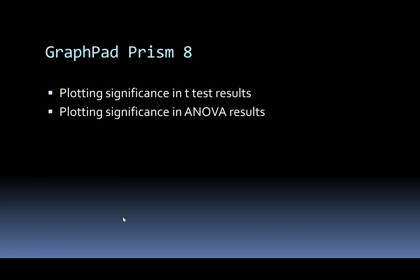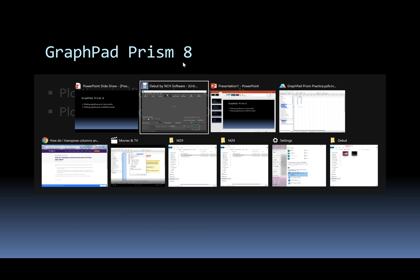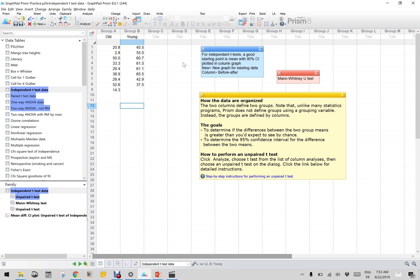In this video, I will show you how to plot the significance in t-test results as well as ANOVA results using GraphPad Prism 8. So let us go back to our example file that is in GraphPad Prism. We have independent t-test data, so let us work with this data.